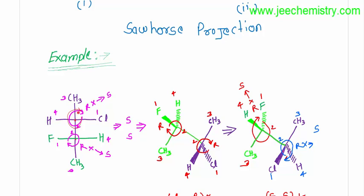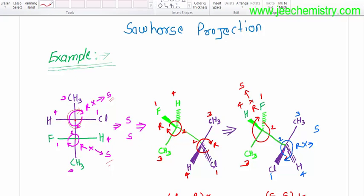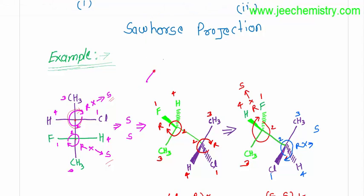If it is not in the lowest position — not in the dash position — then it is R. Now H is in the lowest position but not in the dash position; it is in the wedge position. So the answer will be reversed: one, two, three — this is R, but H is not in the dash position, it is in the wedge position, so the answer will be S. Both are SS. Now we have to draw a Newman model — we have to draw it. This is S. One, two, three, four. Carbon two has chlorine and hydrogen.